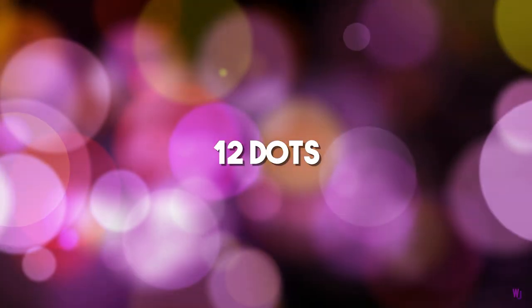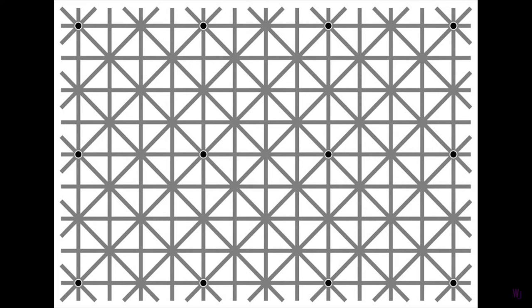Coming in at number 5 is 12 dots. It should be easy to spot 12 black dots at once on a page. However, this illusion proves that our peripheral vision is not as good as we think. At first glance, most people can only see a couple of dots.